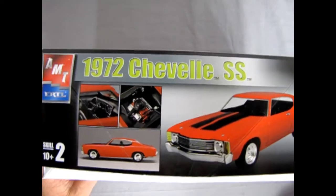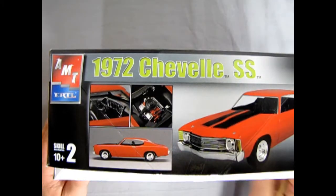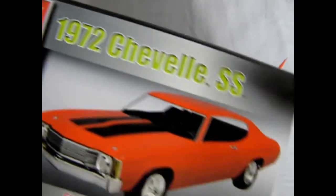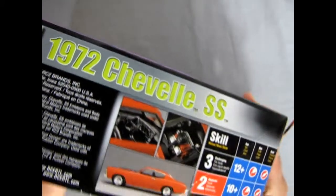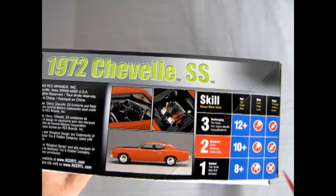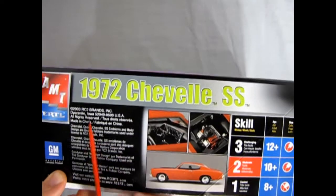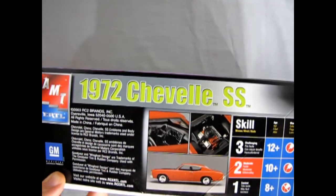As you can see there's a few pictures of the interior, engine, and side profile of the car as well as the three-quarters that we saw in the front of the box. The side of the box mirrors that. This is a skill level 2 kit for ages 10 and up. Requires glue and paintbrush and it came out in 2003 from RC2 brands.